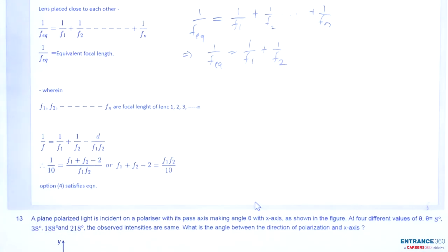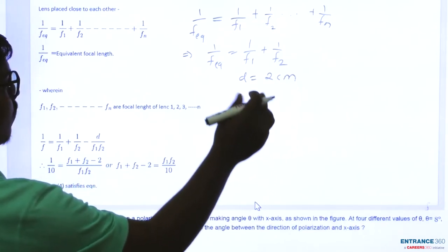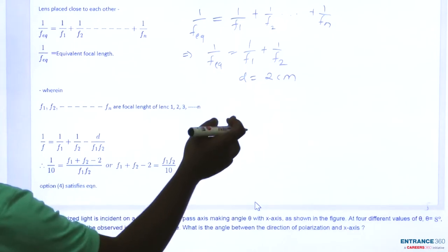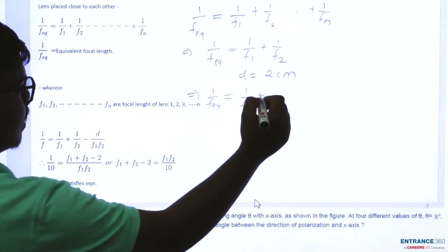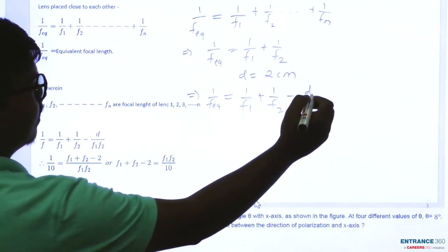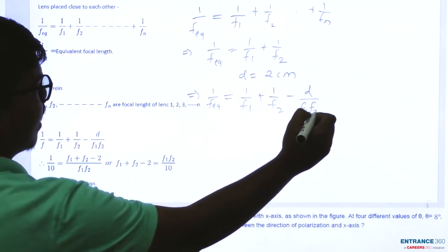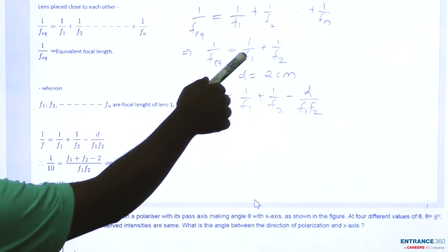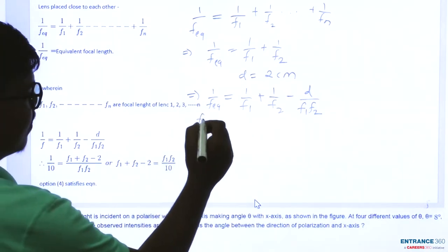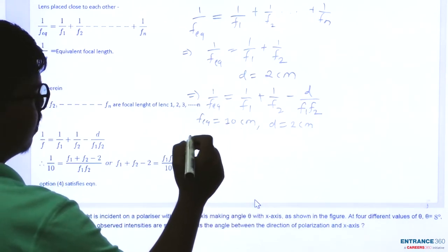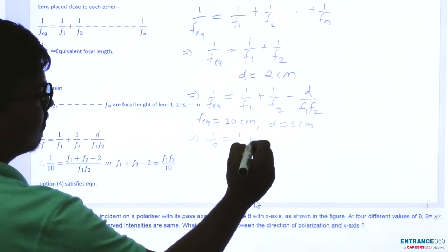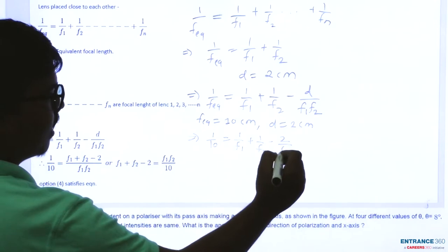This formula applies when lenses are placed close to each other, but in the question they are separated by D equal to 2 centimeter. So the formula is rewritten as: one upon F equivalent equals one upon F1 plus one upon F2 minus D upon F1 times F2. With F equivalent as 10 centimeter and D as 2 centimeter, we get: 1 upon 10 equals 1 upon F1 plus 1 upon F2 minus 2 upon F1 F2.